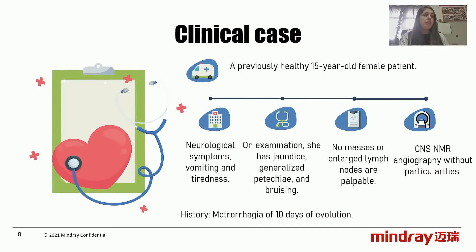A previously healthy 15-year-old patient is presented, referred from another institution due to neurological symptoms, vomiting, and fatigue. On physical examination at our hospital, she was found to be in good general condition, afebrile with generalized petechiae and bruising. No masses or enlarged lymph nodes were palpable. MRI and imaging of the central nervous system were unremarkable. As background, the patient had presented with menorrhagia of 10 days of evolution, seizing one day before entering our institution.